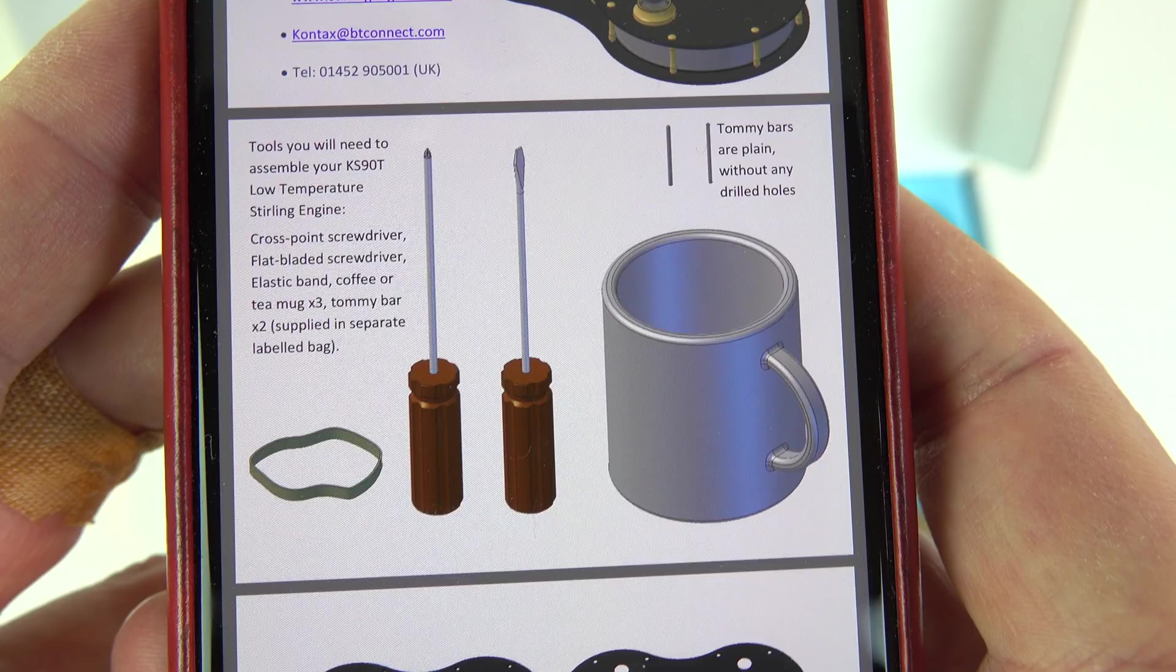You will need to provide your own rubber band, a cross head and a flat head screwdriver and three mugs. I'll explain what that's about later on.